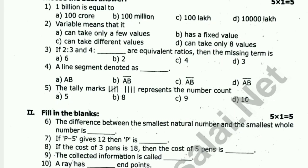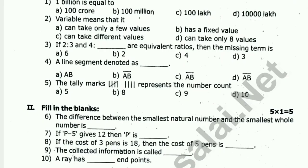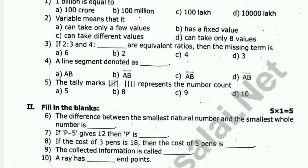Now we will see the number of questions in this paper. The first question paper has a total mark of 60. First, choose — it's 5 out of 5. Let's see the questions.